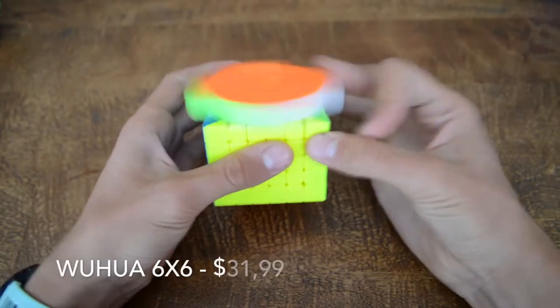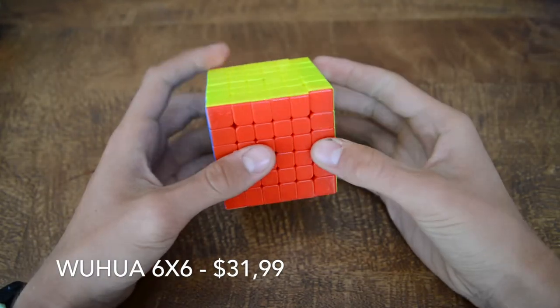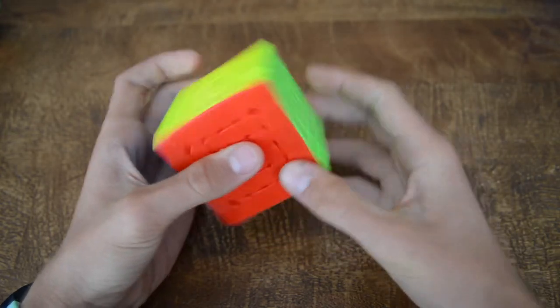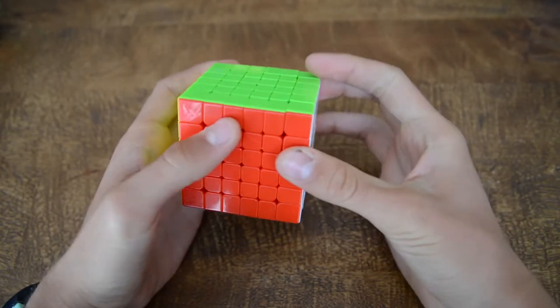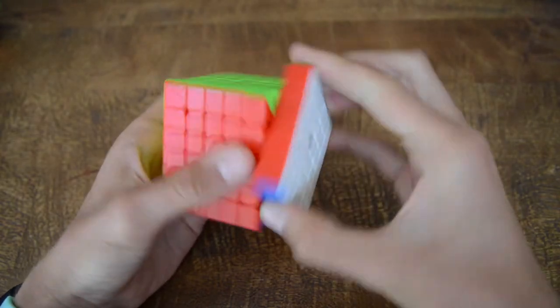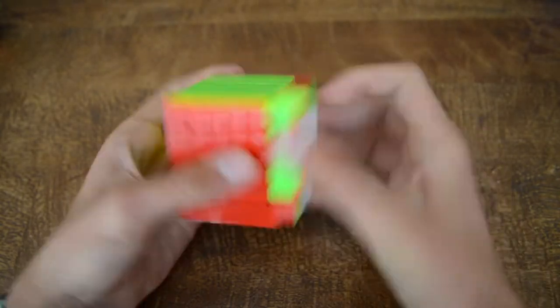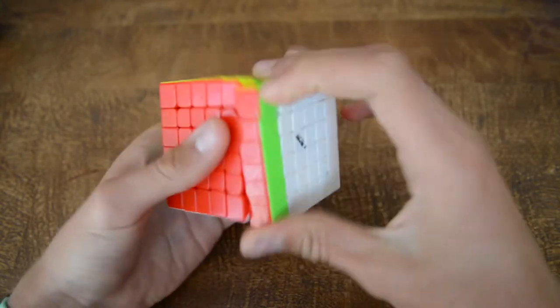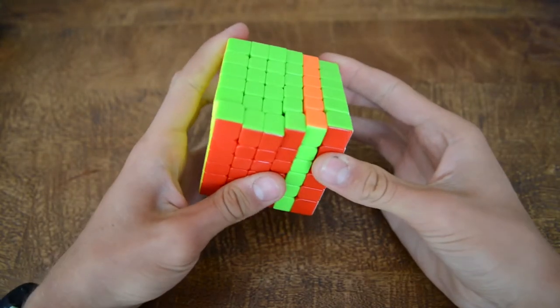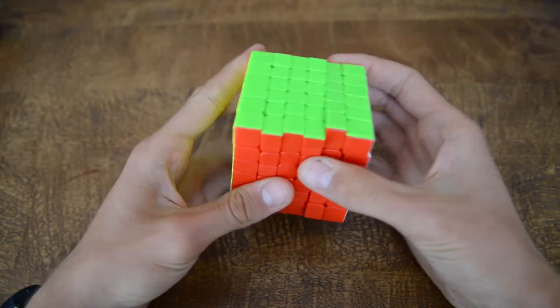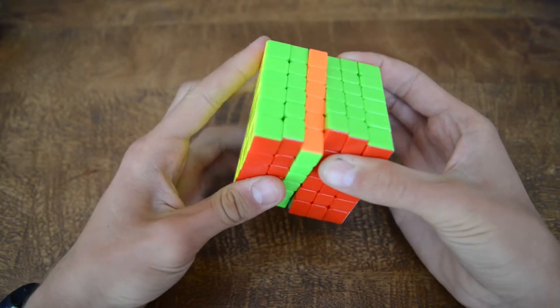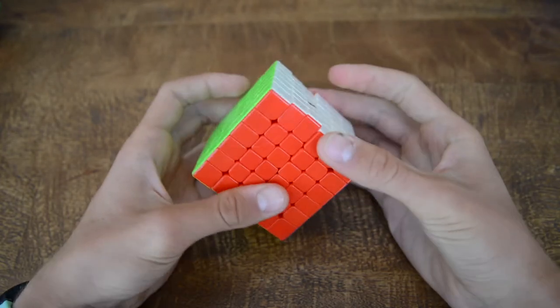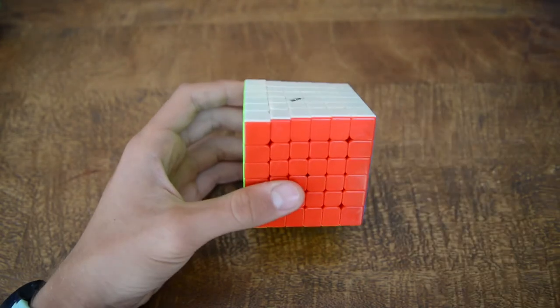Next up, the 6x6. This is the Yuxin 6x6 and when I first unboxed it, it was just the same as now. I've done only like five solves on this cube and actually it is quite nice and it did turn kind of sluggish when I unboxed it in the middle layers. But now, they turn just fine. I am not the best 6x6 solver and I'm actually quite bad on the 6x6, but it is a good cube and I'm happy about it.